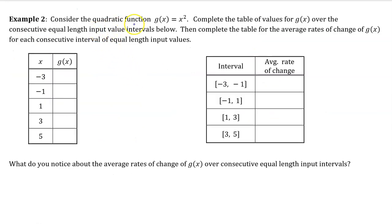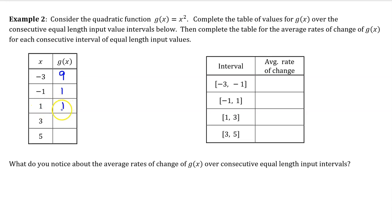Example 2. Consider the quadratic function g of x equals x squared. Complete the table of values for g of x over consecutive equal length input value intervals. g of x is x squared, so negative 3 squared is 9, negative 1 squared is 1, 1 squared is 1, 3 squared is 9, and 5 squared is 25.